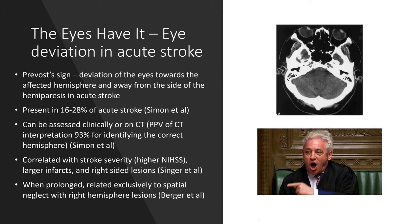Eye deviation is also useful as a prognostic sign, correlating with stroke severity — patients with eye deviation tend to have a higher NIHSS and larger infarcts. Though seen in both left and right-sided strokes, it is more common with right-sided lesions, and when prolonged beyond 24 to 48 hours, one study suggests this is exclusively due to spatial neglect from right hemisphere lesions.